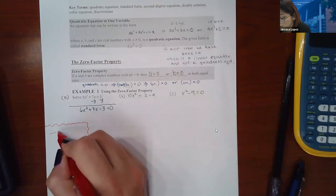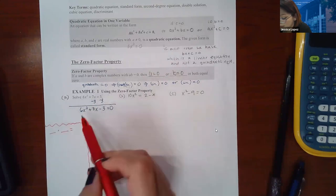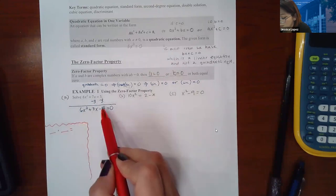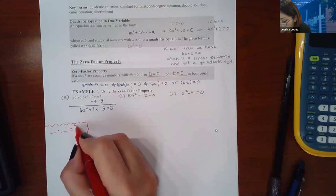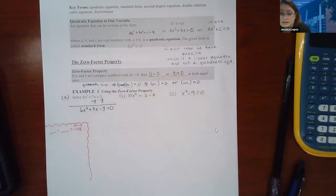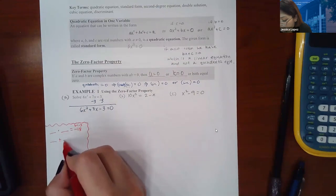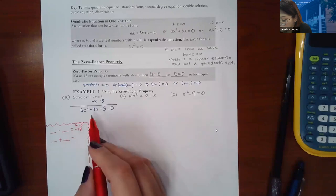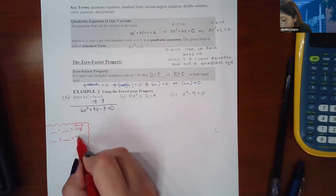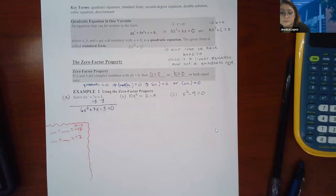So I'm going to find what times what gives me A times C. So 6 times negative 3 is actually negative 18. And then I have to figure out if those numbers give me this middle term, which is positive 7. And so now we're on the quest to find these magic numbers.